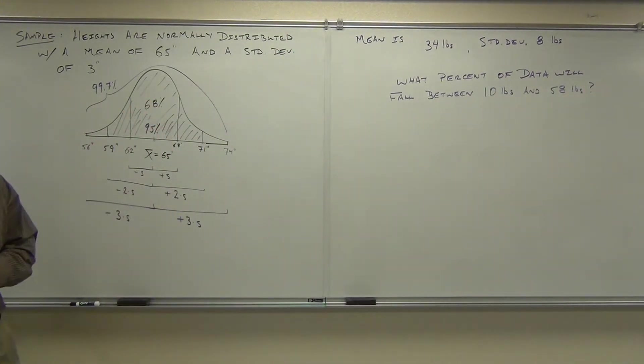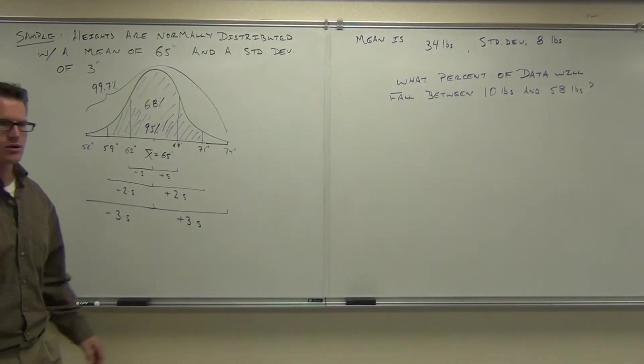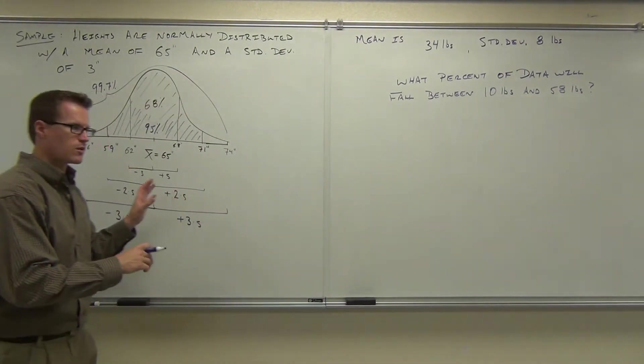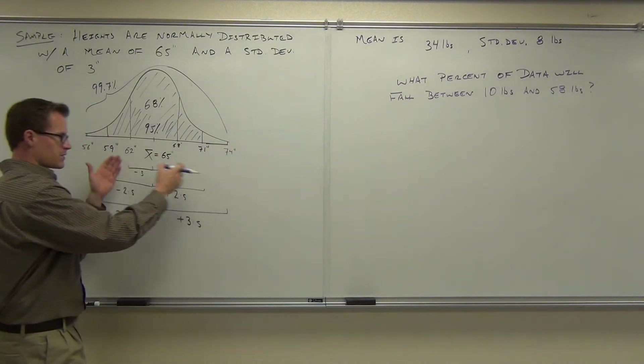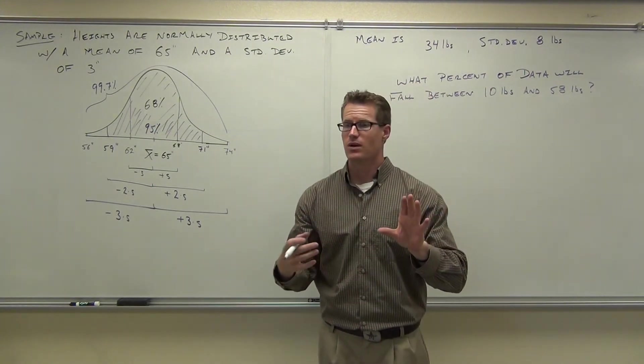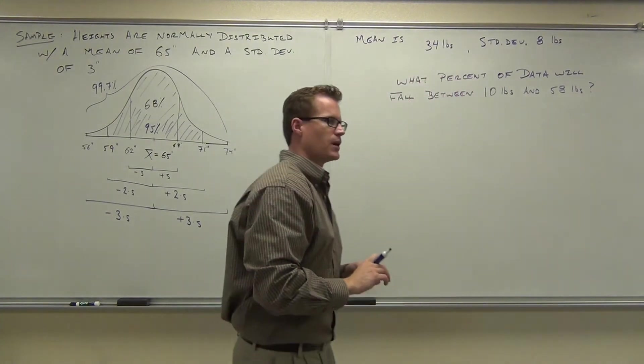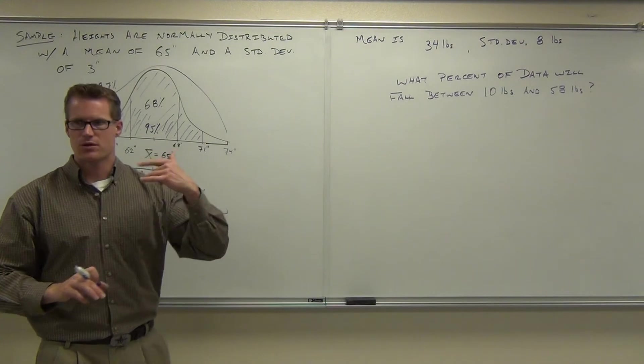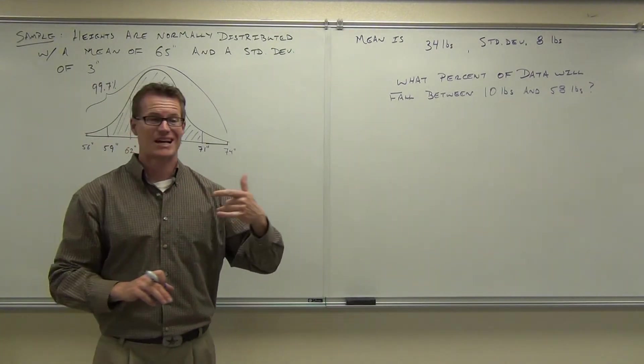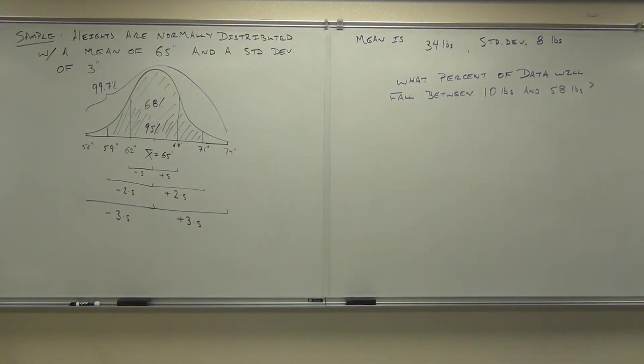What percentage of data will fall between 10 pounds and 58 pounds? Figure that out. Do it on your own. If you know it, don't say it out loud. Just figure it out on your own. I want you to understand that we don't have to always go this way. We don't have to figure out the standard deviations. We can take the limit of our data, use that in conjunction with our standard deviation and mean to figure out what percentage of our data falls in that range. So figure that out. Think about it for a few seconds. I want you to struggle with it in your head first.